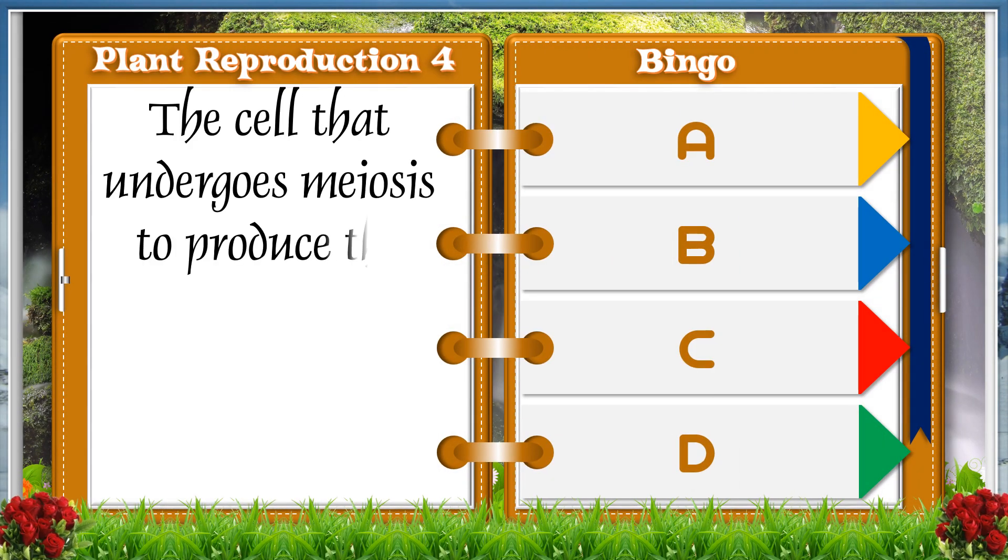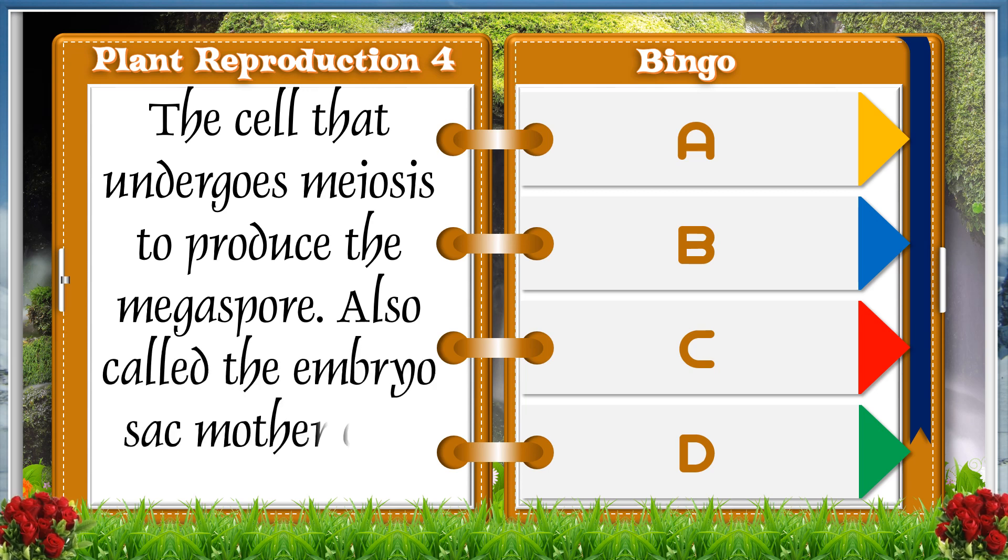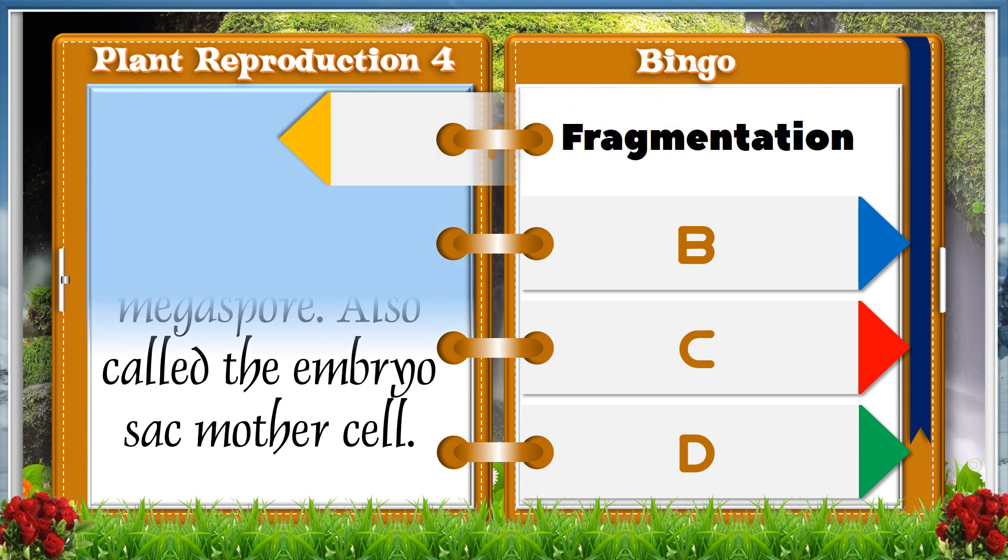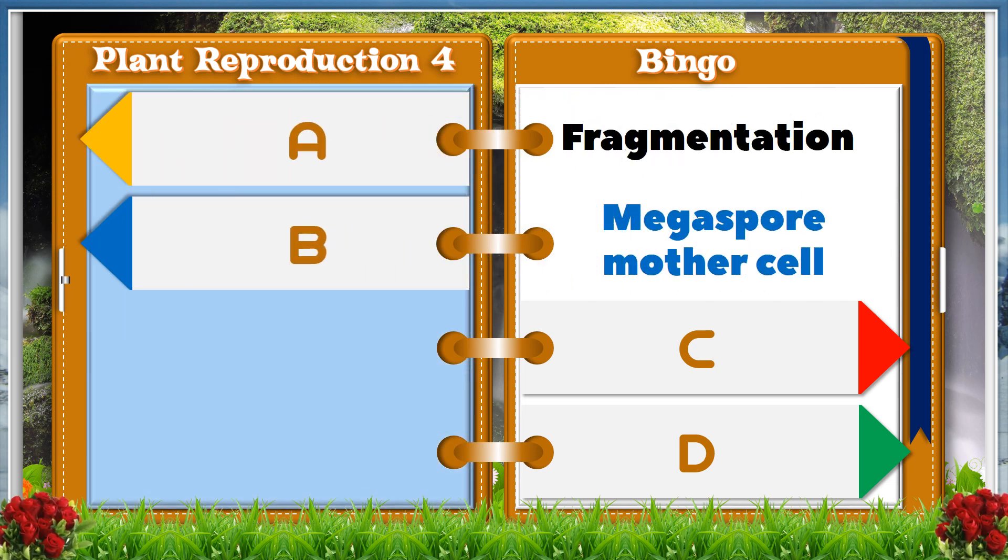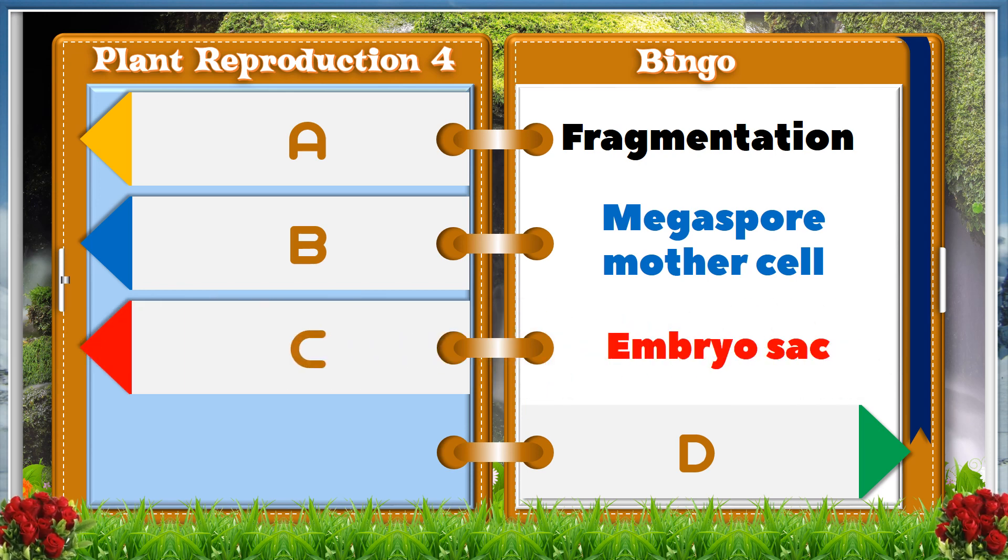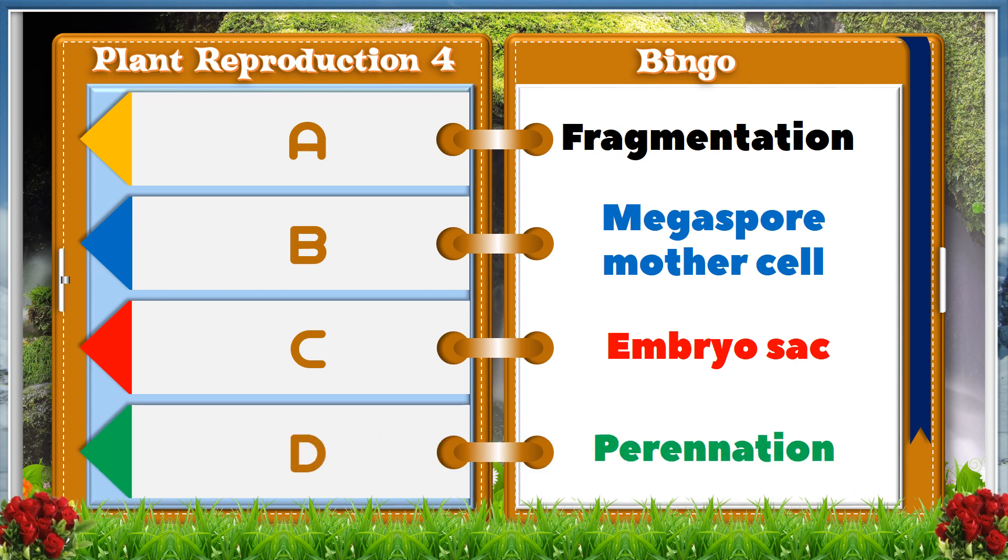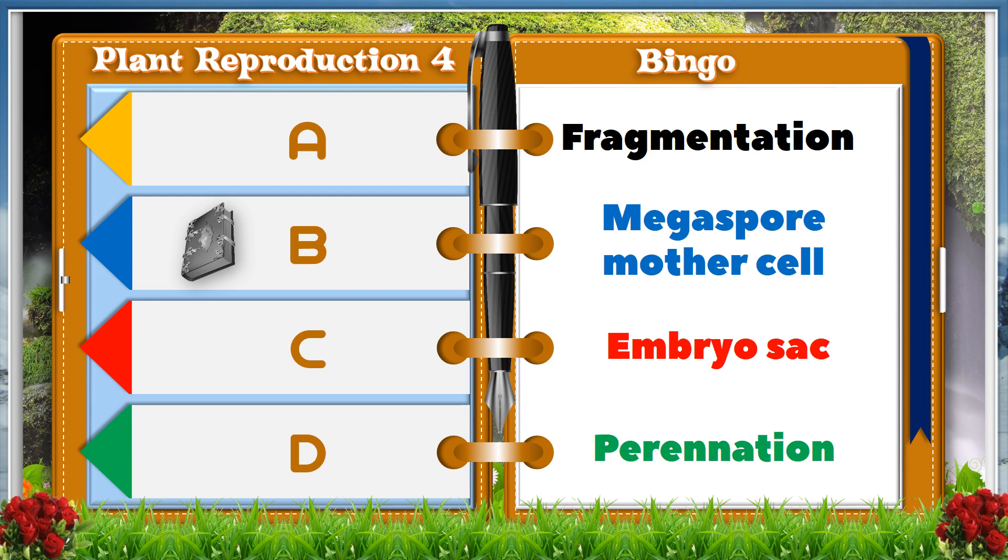The cell that undergoes meiosis to produce the megaspore, also called the embryo sac mother cell. A. Fragmentation. B. Megaspore mother cell. C. Embryo sac. D. Perennation. And the answer is B, Megaspore mother cell.